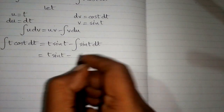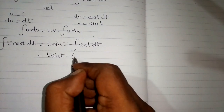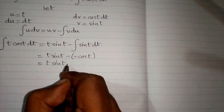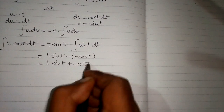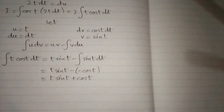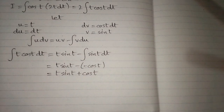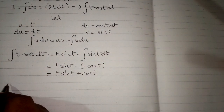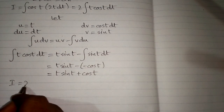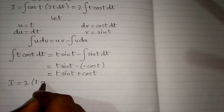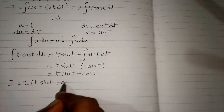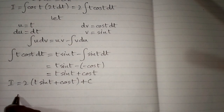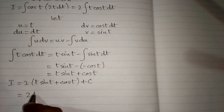Evaluating, we get t times sine of t, and the integral of sine of t is minus cosine of t, so we have t times sine of t plus cosine of t. Putting this back into our expression, I equals 2 times the quantity t sine of t plus cosine of t, plus C, where C is the constant of integration.